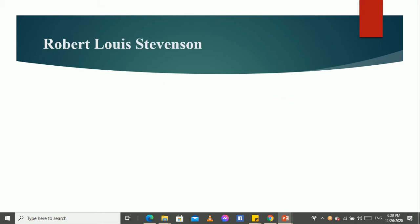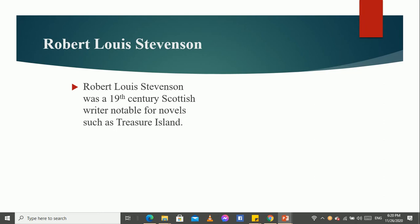So, we are going to learn a poem, My Shadow, from 6th class. Before going to learn the poem, let us learn about the poet. The poet, Robert Louis Stevenson, was a 19th century Scottish writer, notable for novels such as Treasure Island. He wrote poems for children using simple English like this, My Shadow.